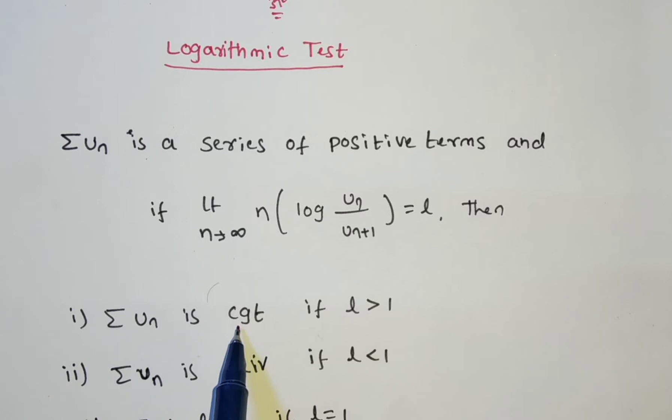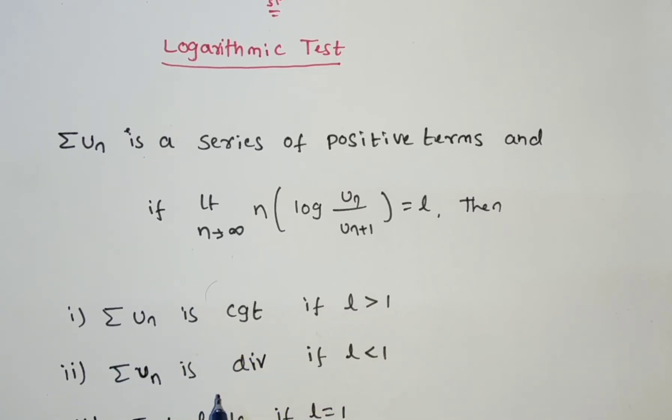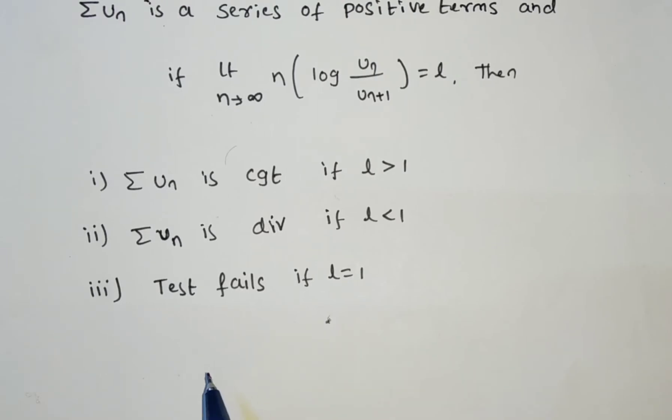If l greater than 1, summation u_n is convergent. If l less than 1, summation u_n is divergent. If l is equal to 1, test fails.